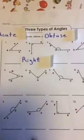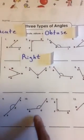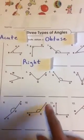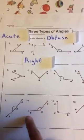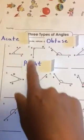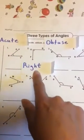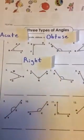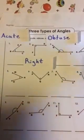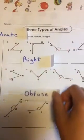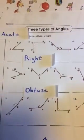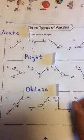Let's look at number ten. What does this one look like, guys — acute, right, or obtuse? You're right, guys — obtuse. It's much bigger than the right angle.